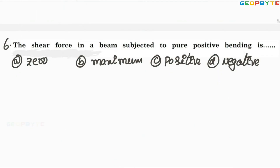Sixth problem: the shear force in a beam subjected to pure positive bending moment. When a beam is subjected to only bending moment, the shear force is zero. Therefore option A is absolutely correct. This is a very important problem.